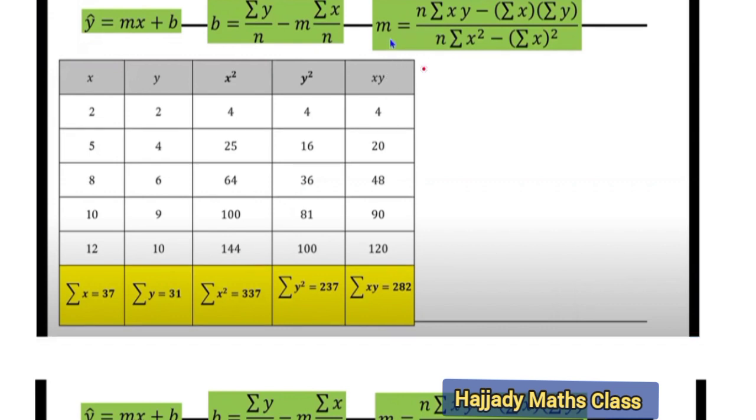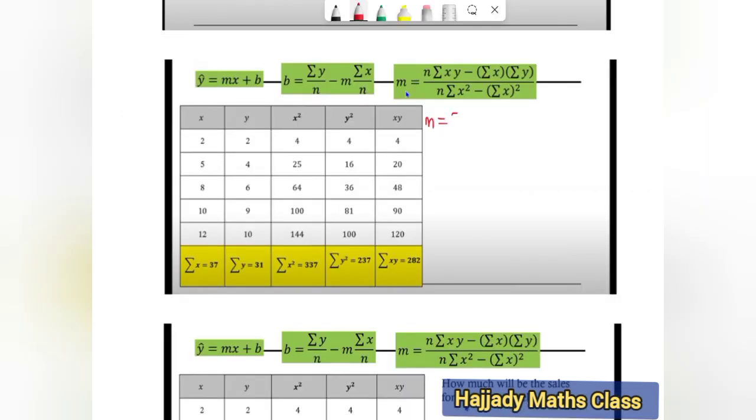Don't forget that our n is the same thing as the number of observations, which is 5. So we have 5 multiplied by 282 minus 37.